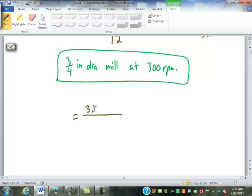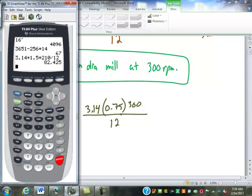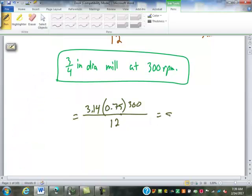Let's plug into our formula here. Pi, so 3.14, times 0.75, or three fourths, times 300, and of course over 12. So 3.14 times 0.75 times 300 divided by 12. 58.875, of course that's feet per minute.